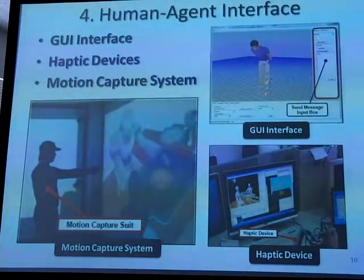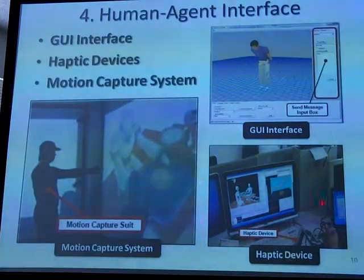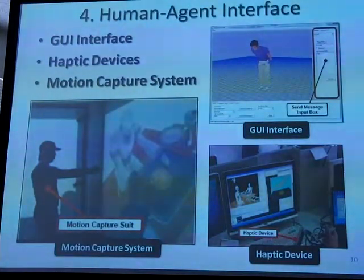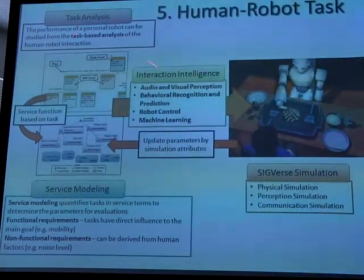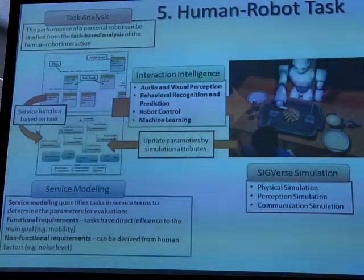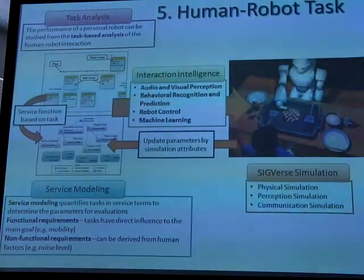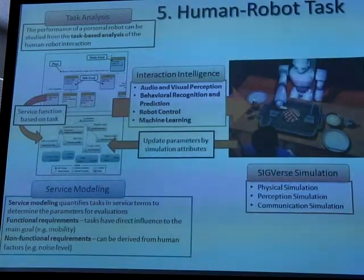We currently have a basic interface from the viewer. A colleague is working on an interface using a haptic device to control the simulation, and we can also use a motion capture system to participate and interact in the simulation. For task planning and evaluation, we can model interaction in different ways to understand the evaluation function of all the tasks — because human action has a different modeling structure compared to classical robot motion planning.